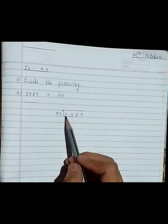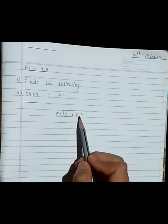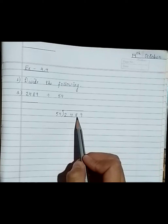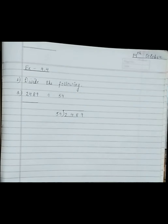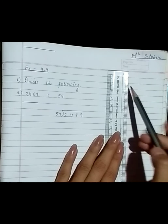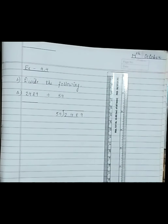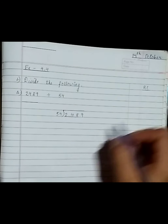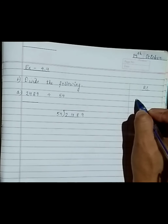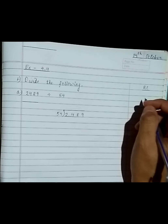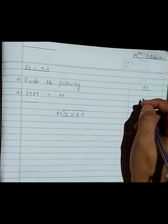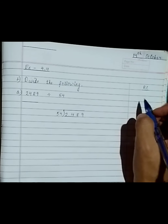So we have 248. Let's see whether 248 is in the 54 times table. Draw a line for a rough column, and let's find out whether 248 is in the times table of 54, or which multiple is the nearest to 248.